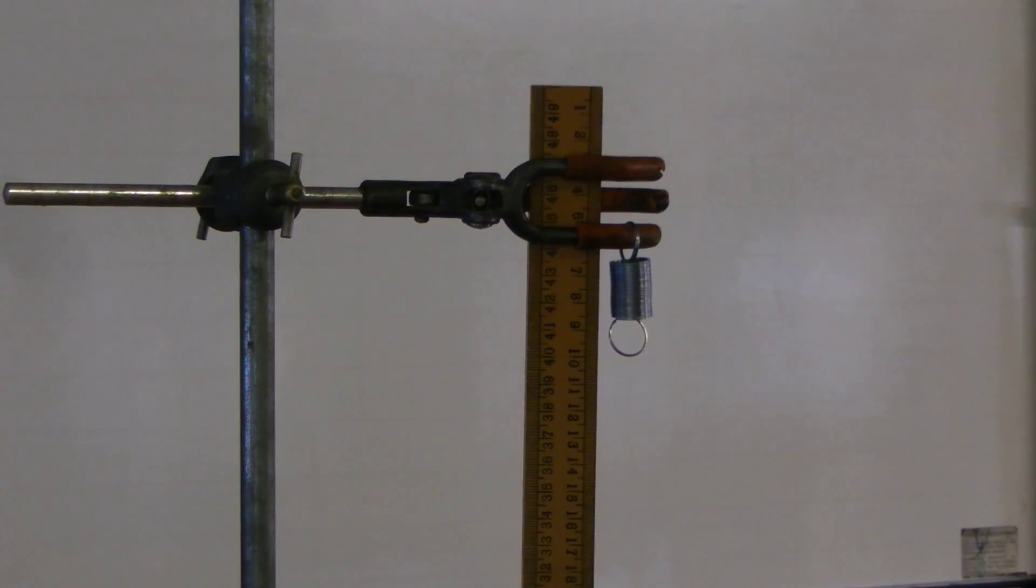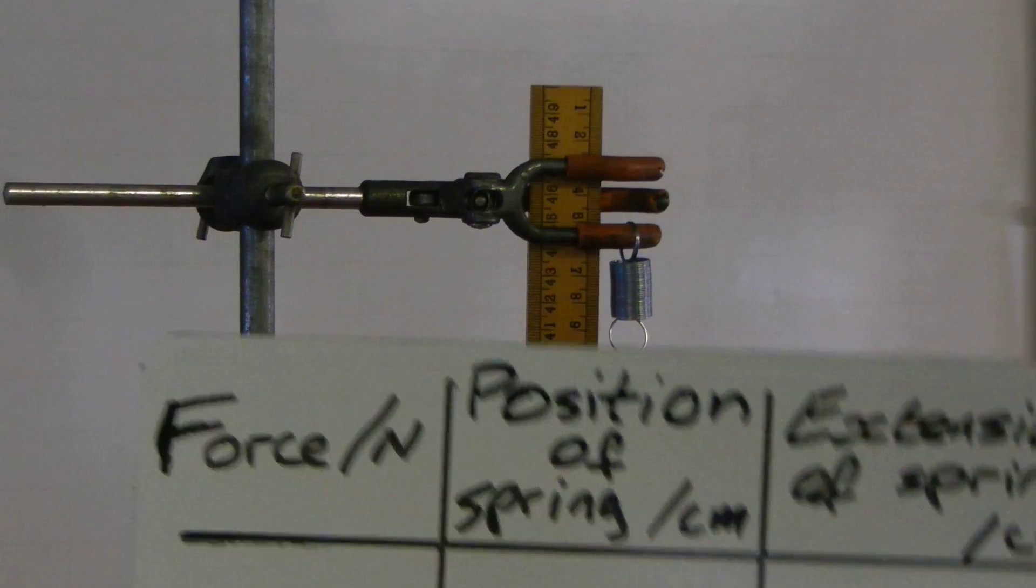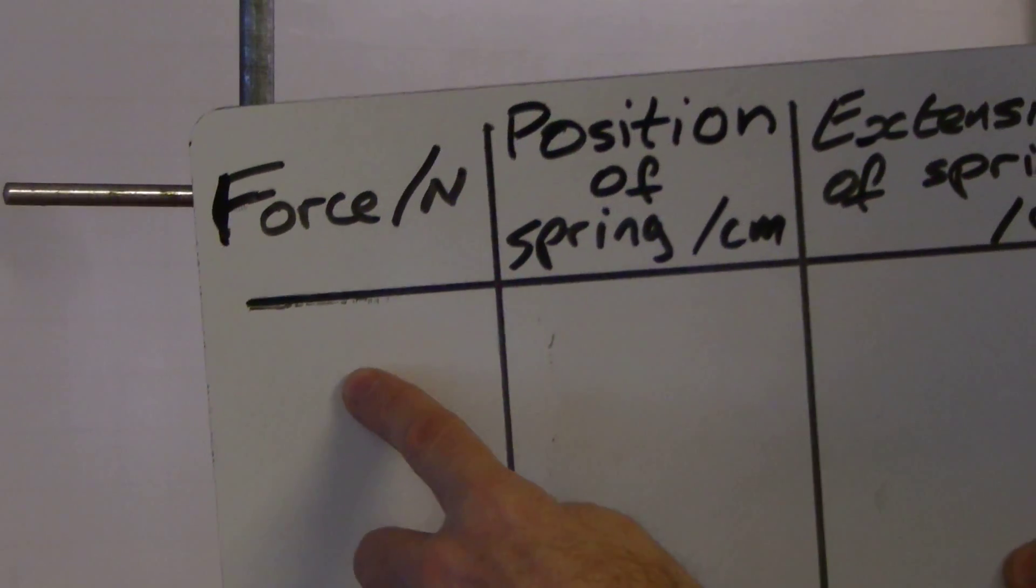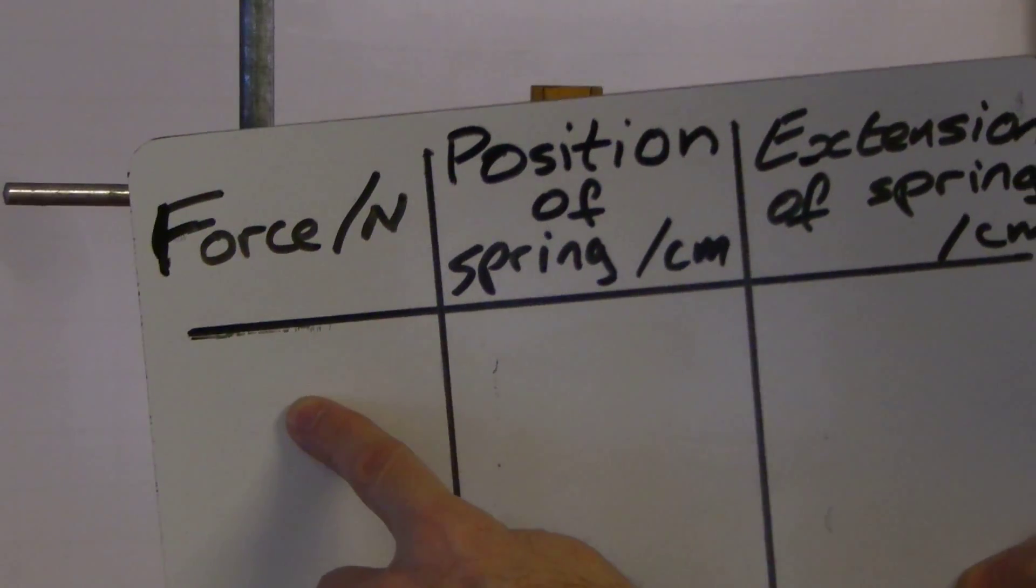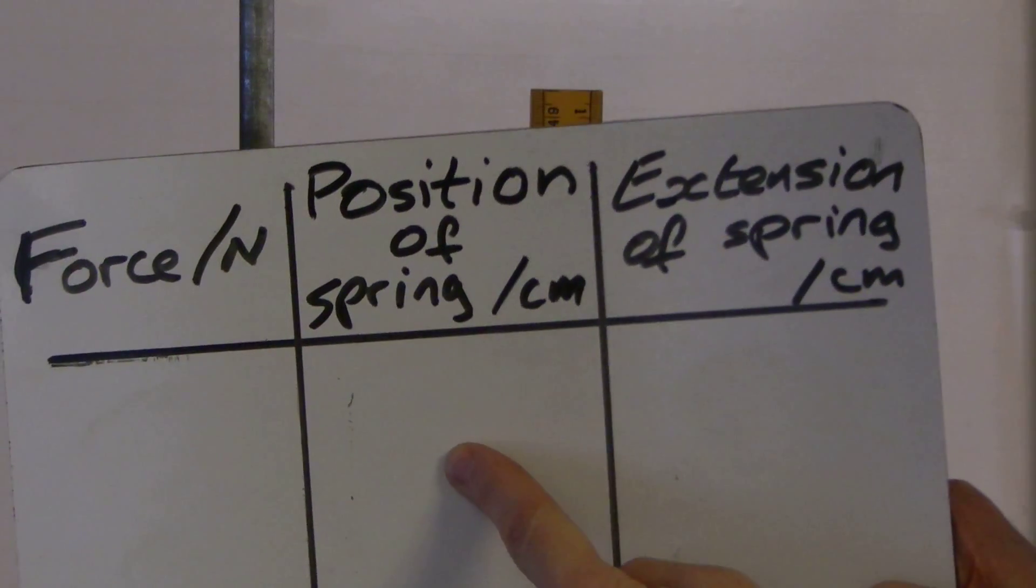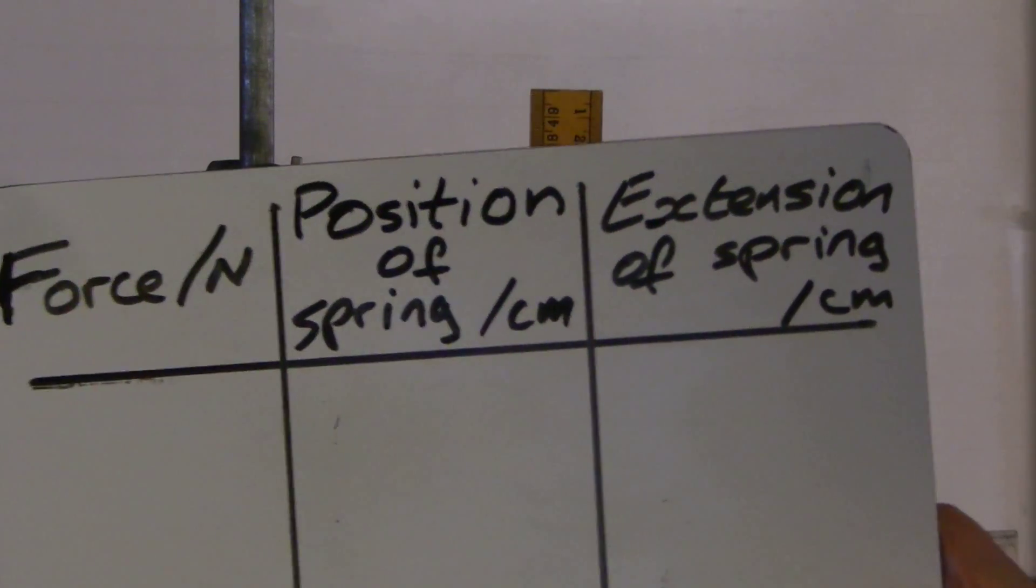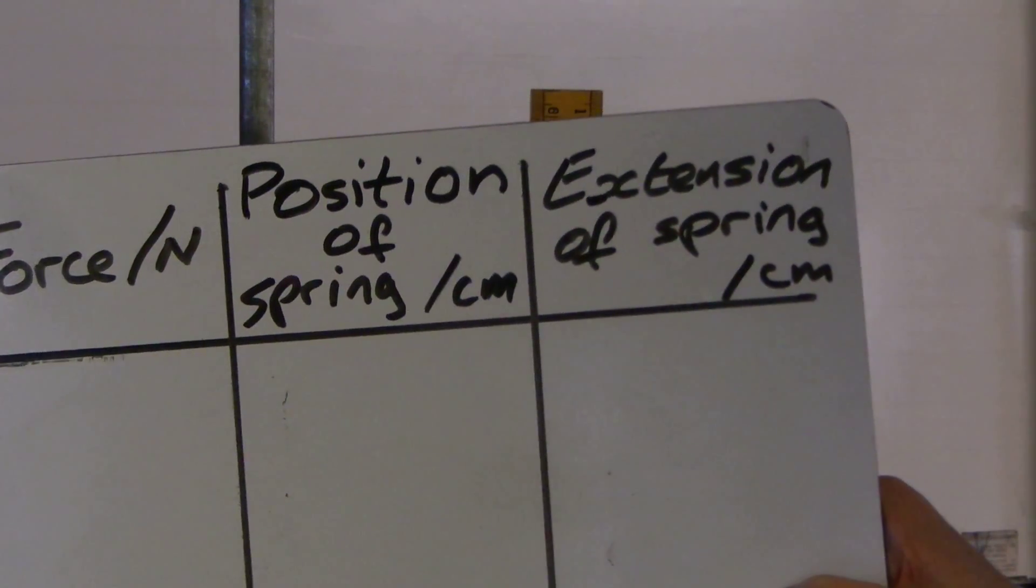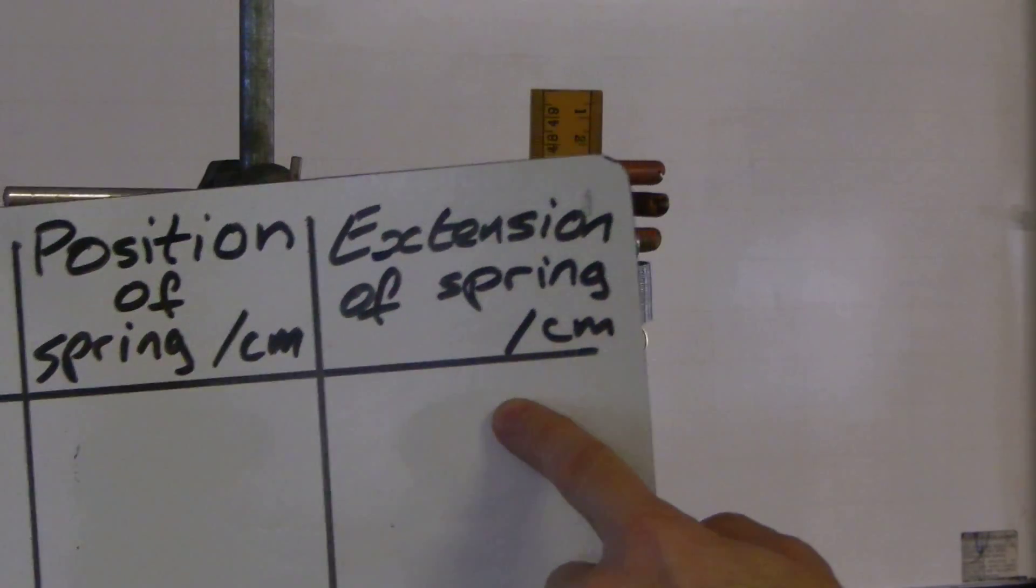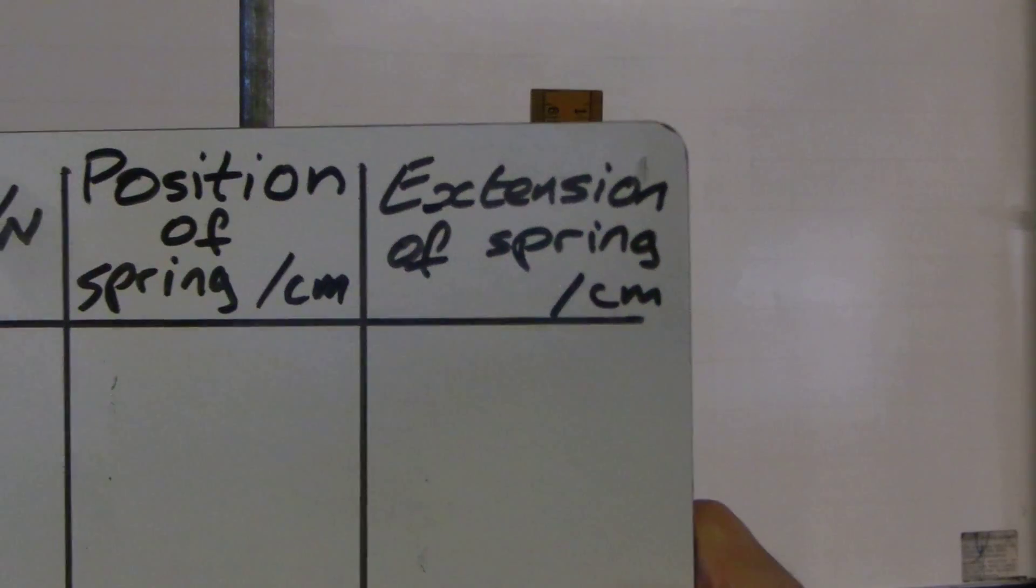You're also going to need to put together a results table on your worksheet, and it's going to look something like this, where we've got force in newtons, that's our independent variable. Then we're going to have a note of the position of the spring for the different forces in centimetres. Notice headings and units in each column. And finally, a third column for the actual extension, how much it's stretched by. Again, that would be in centimetres.